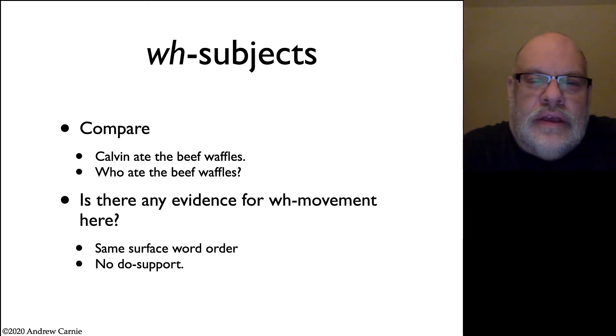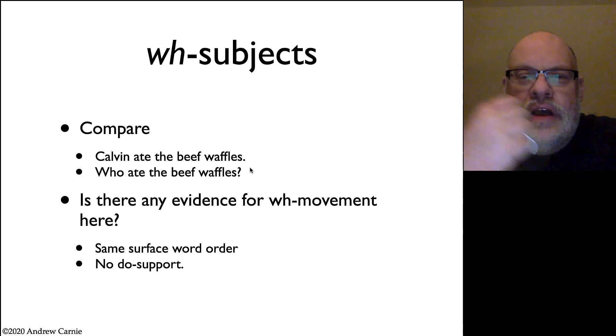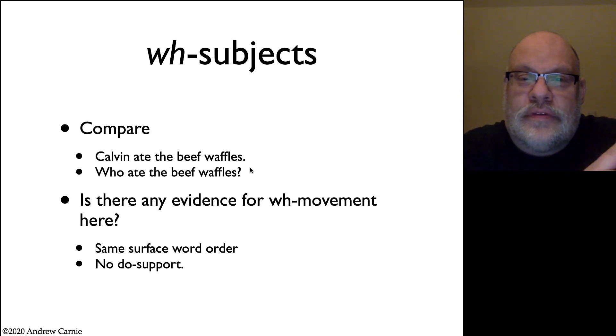Now the other thing is, there's no real evidence that you have WH movement, because if you look at the simple surface string, who and Calvin are in exactly the same position relative to the rest of the clause. When we looked at WH objects, we knew there was movement because when the word was in object position it was in one position, and when it was a WH question it was in a completely different position. Here, they're in the same position. So we can ask the real question, is there evidence for WH movement here?